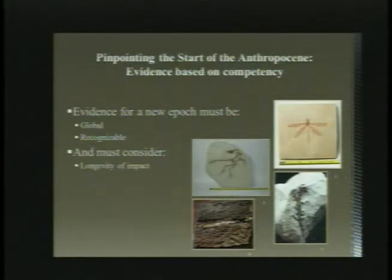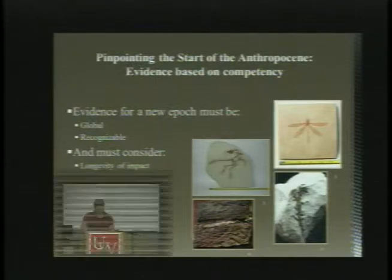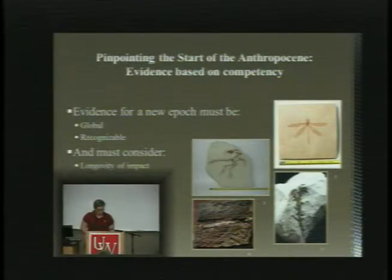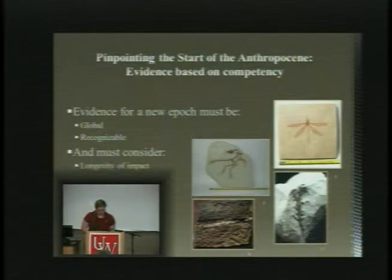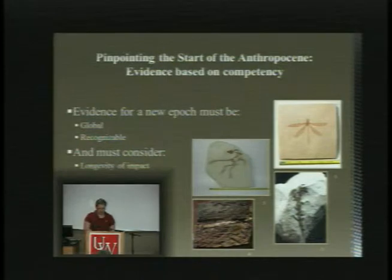Nobel laureate Paul Crutzen coined the term 'Anthropocene' at a scientific conference in 2000 to put a name to human impact on the biosphere. Since then, the Anthropocene has been mentioned in over 200 peer-reviewed journals and has yet to actually be declared an official epoch.